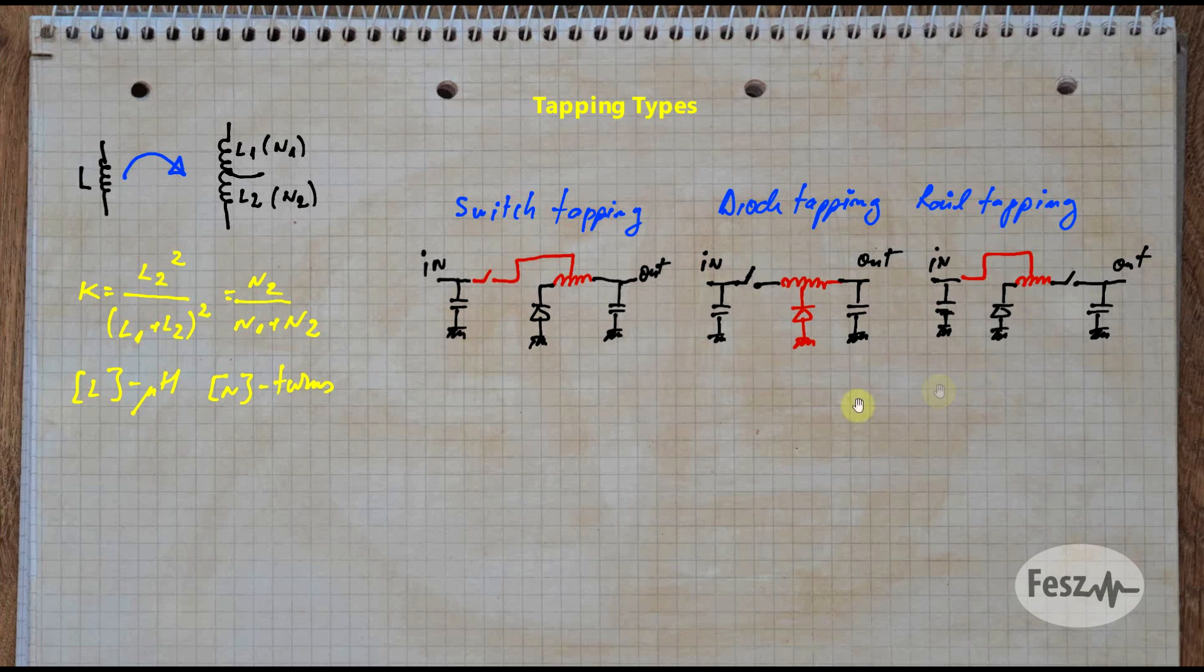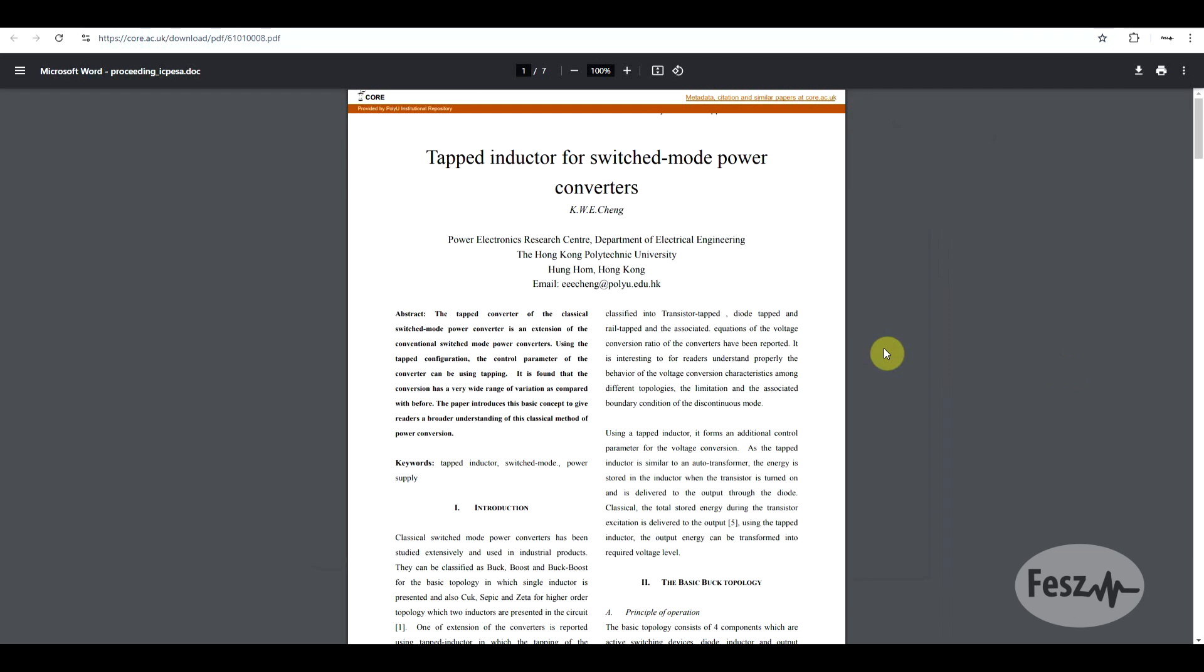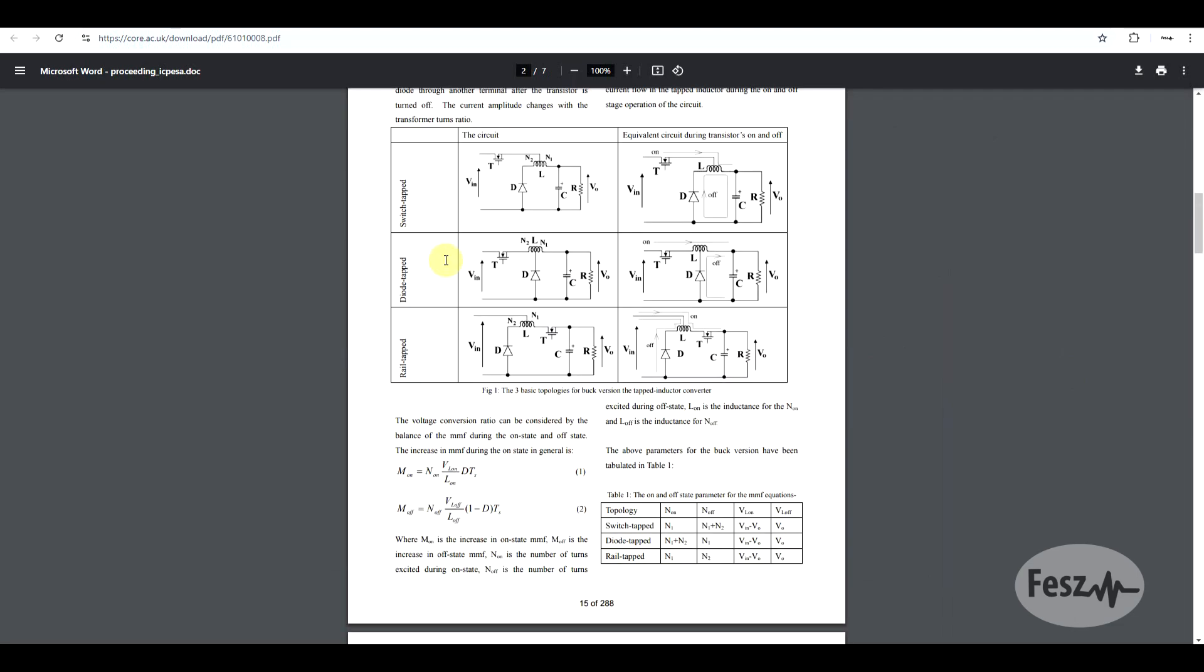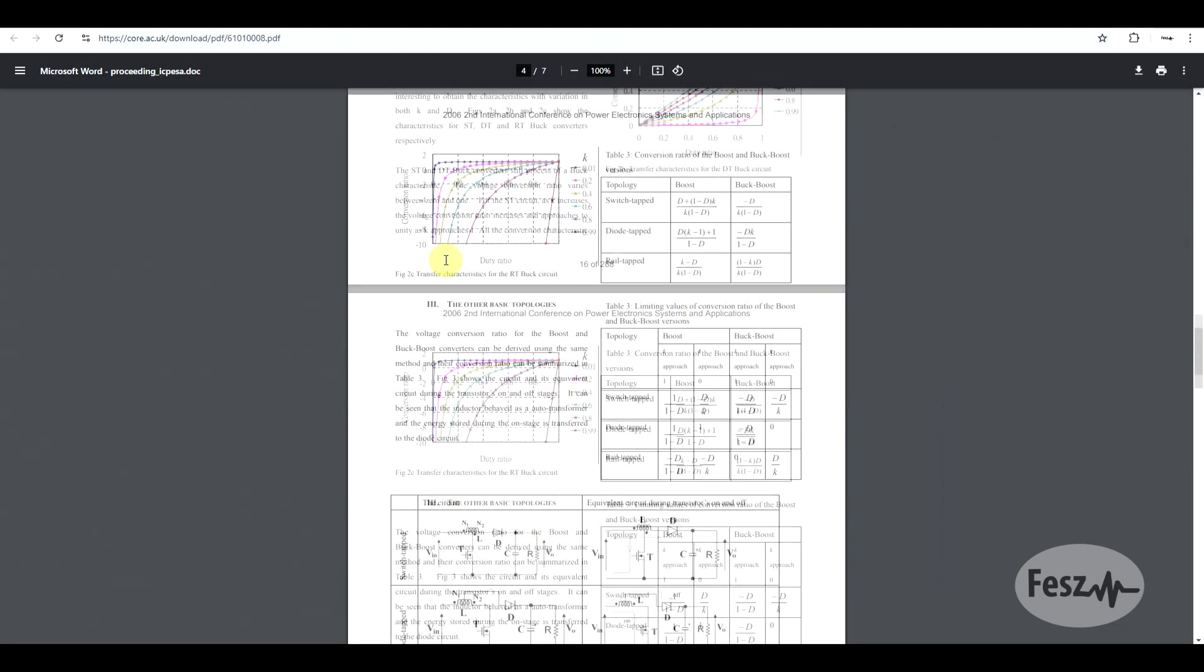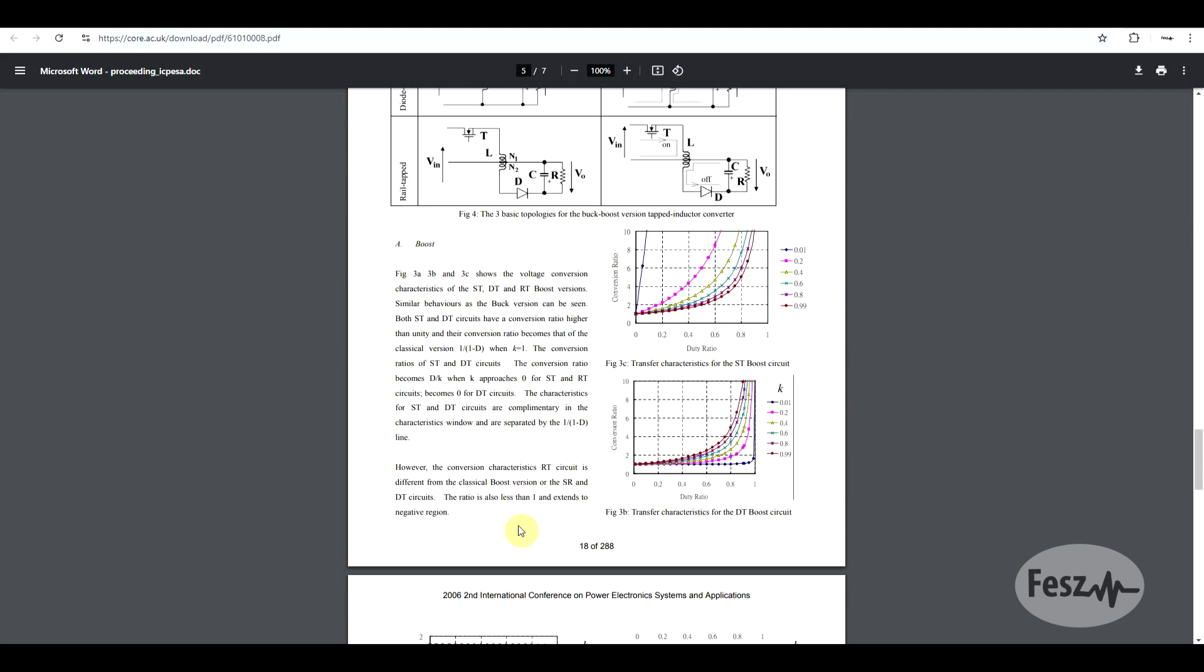So in this example I'm using the buck converter, but these three topologies can be built for all three of the basic converters. Now by changing the exact method of connection, all of these three different topologies have different voltage transformation ratios, so for the same duty cycle you will be getting different output voltages. Now if you're interested in the subject in more detail, as well as the exact equations needed to determine the exact voltage conversion ratio, I do recommend that you check out this paper, since this analyzes all of the three basic topologies and their multiple inductor tapping options. It's the only piece of information as detailed as it is that I could find on the subject, and of course I will be leaving a link to it in the description.